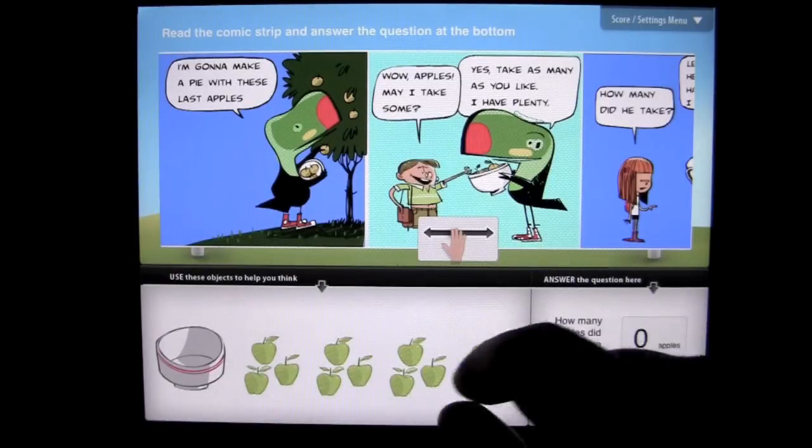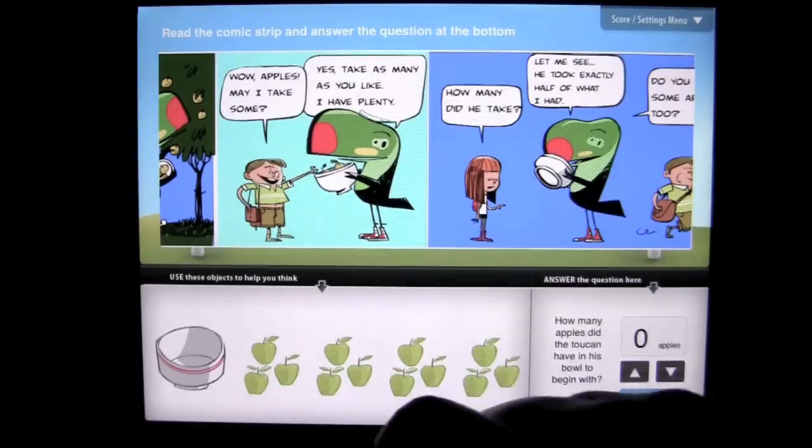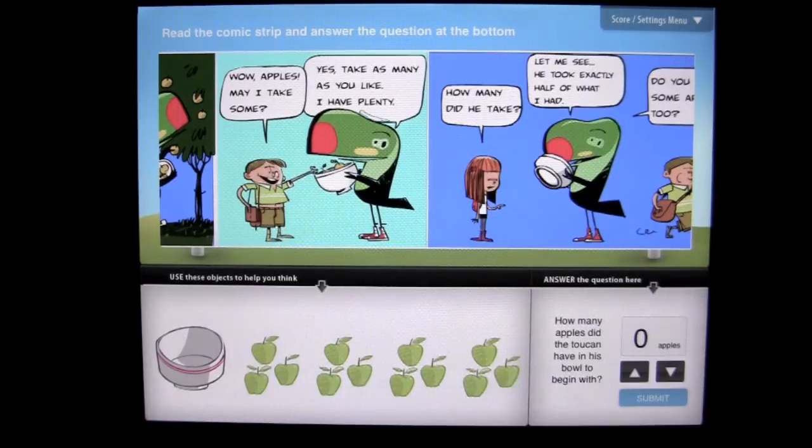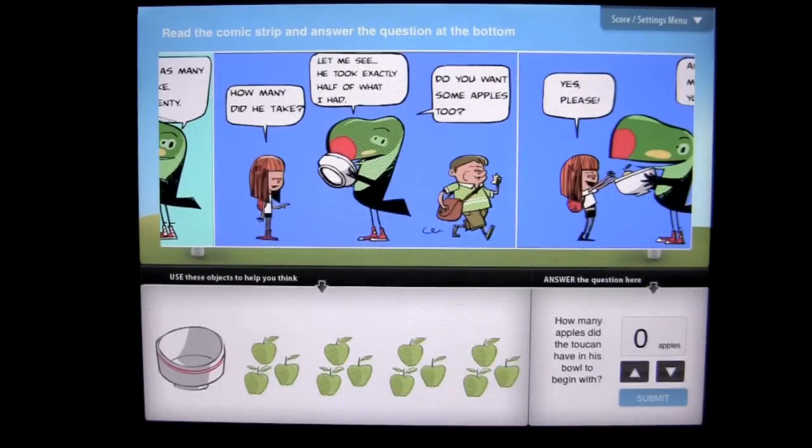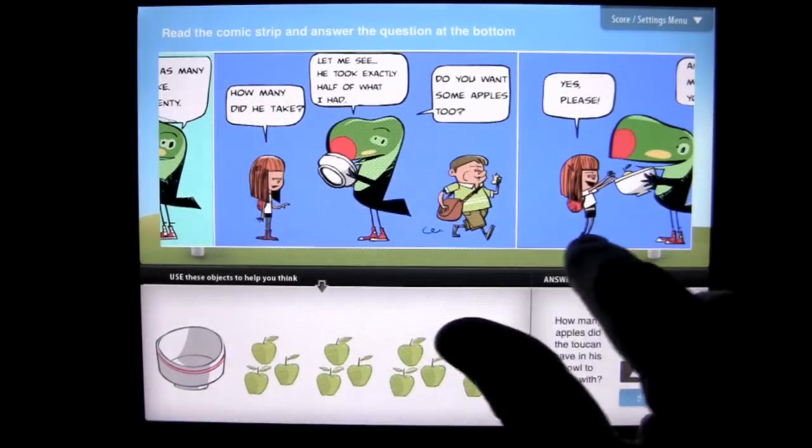A toucan's going to make an apple pie. A young boy says, hey, can I have some apples? The toucan is very generous. He says, take what you want. And then the girl comes up and she's like, can I have some apples? And he's like, sure. And she's like, how many did he take? And he's like, well, let me see. He took exactly half of what I had. This is where the word problem starts.